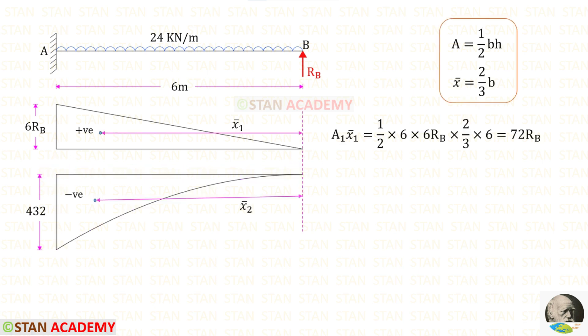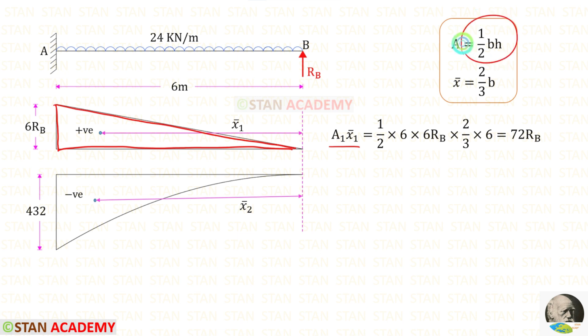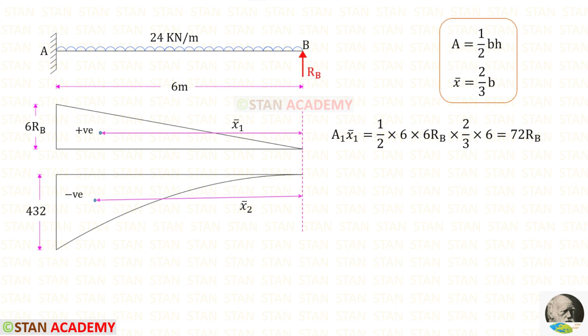Now let us find area 1 times x1-bar. We know that it is a triangle. The area formula is half times base times height, and the centroid distance about the right side is 2/3 times the breadth. Using these formulas, we can find area 1 times x1-bar, and we get 72Rb.